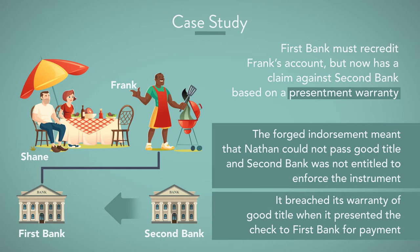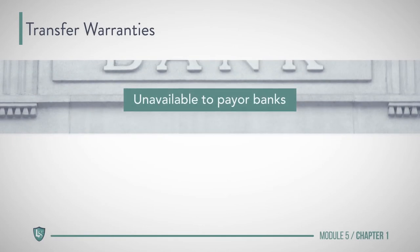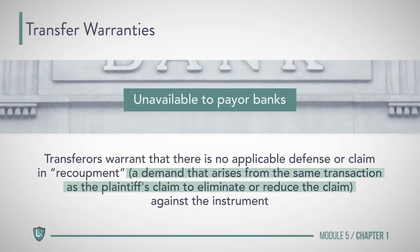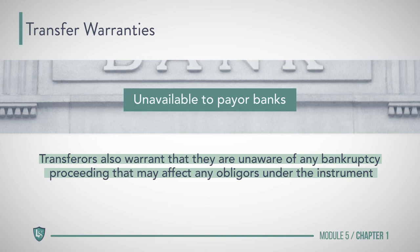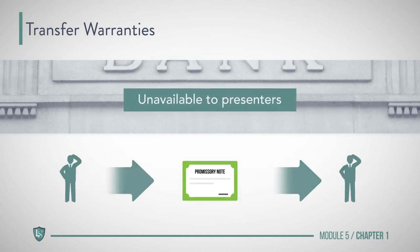Second Bank breached its warranty of good title when it presented the check to First Bank for payment. There are two other transfer warranties not available to payer banks. Transferors warrant that there is no applicable defense or claim in recoupment against the instrument — a claim in recoupment being a demand that arises from the same transaction as the plaintiff's claim. Transferors also warrant that they are unaware of any bankruptcy proceeding that may affect any obligors under the instrument. Note that presenters do not make these warranties, only transferors.